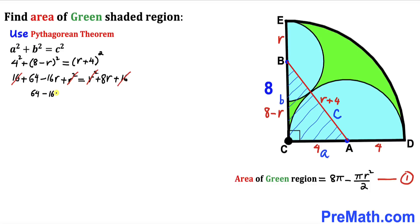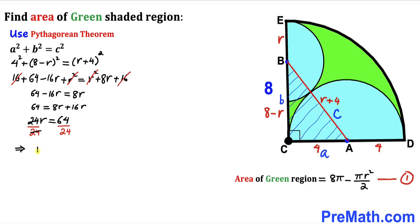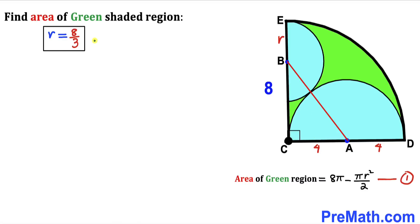After cancellation we are left with 64 minus 16r on the left side equals 8r on the right side. Moving the negative 16r to the right gives 64 equals 8r plus 16r, which simplifies to 24r equals 64. Dividing both sides by 24, the radius r equals 8 divided by 3.